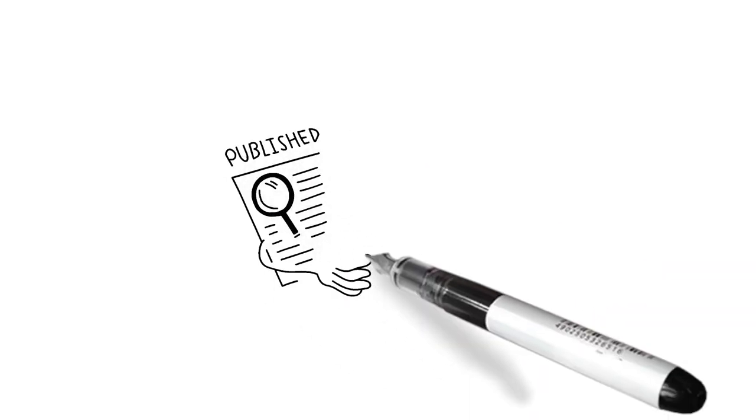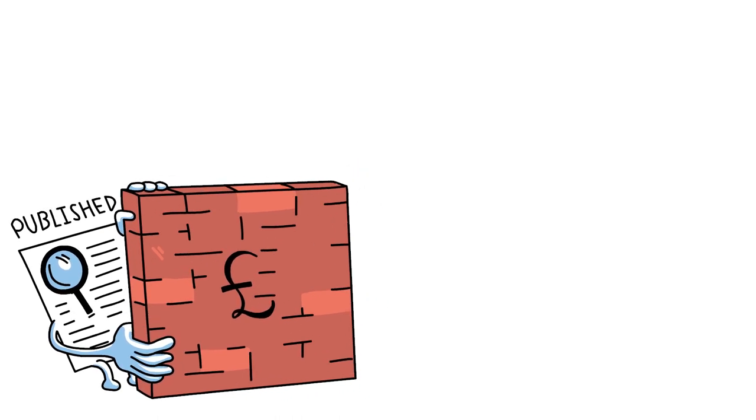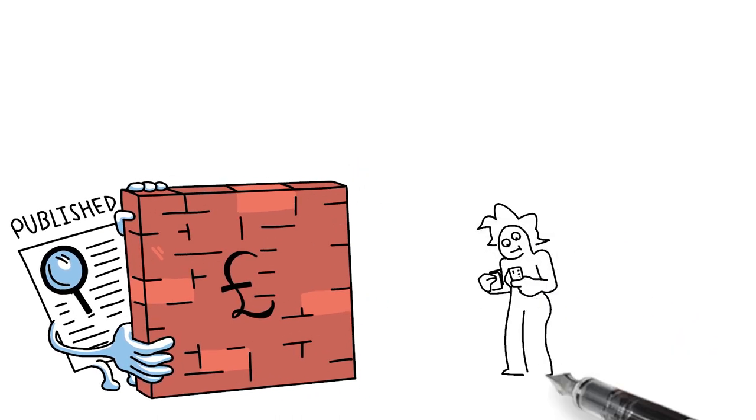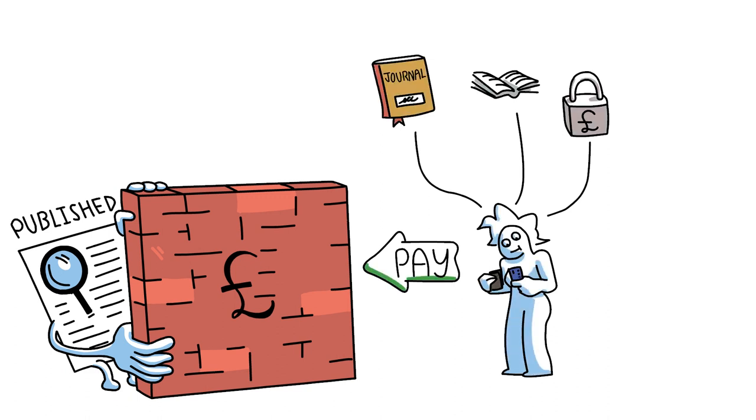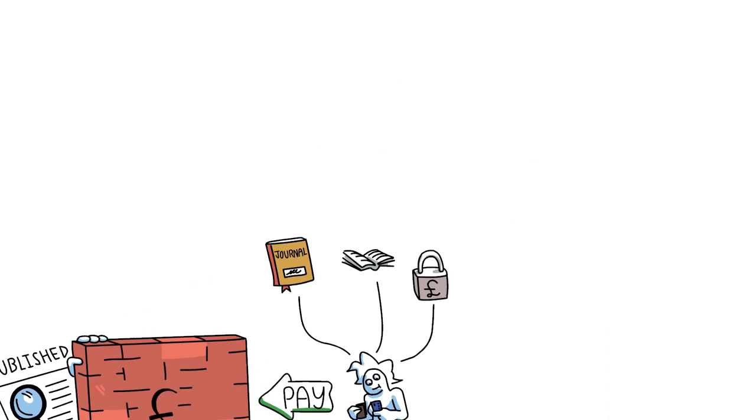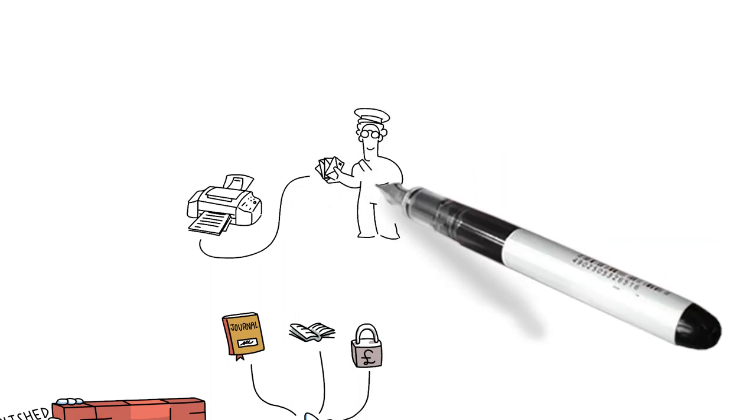Until relatively recently, most academic research has been published behind a paywall. That is, you have to pay to access it by subscribing to a journal, buying a book, or paying an access fee. This model made sense in a world where research was printed and disseminated by mail, a costly process.